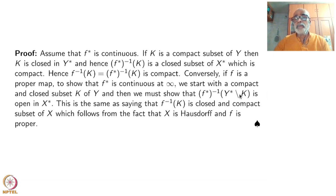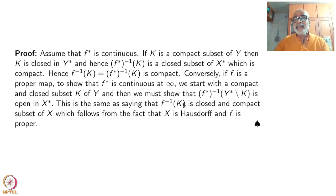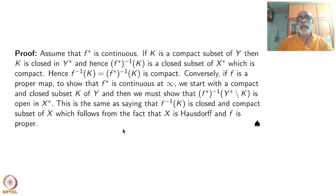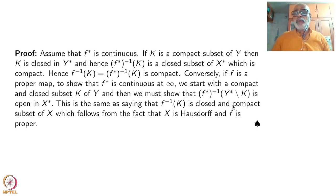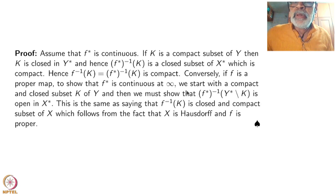The inverse image is X minus f-inverse of K, which is X-star minus f-inverse of K since Y-star is there. That is a neighborhood by definition inside X-star of infinity. Since we have assumed that f-inverse of K is compact whenever K is compact, this will be a neighborhood. So neighborhoods of infinity-prime have their inverse images as neighborhoods of infinity inside X-star.